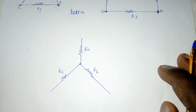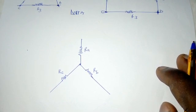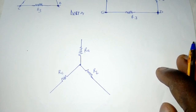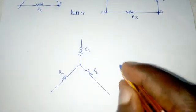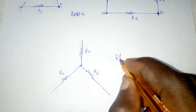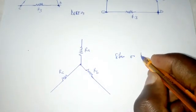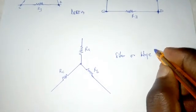Three resistors are said to be in star or Y when all three resistors have a common point of connection, as we see here. This is the star connection, shown in the form of a Y.